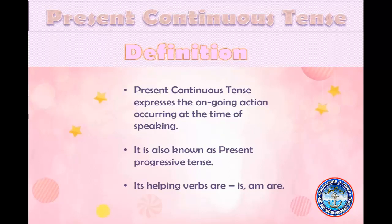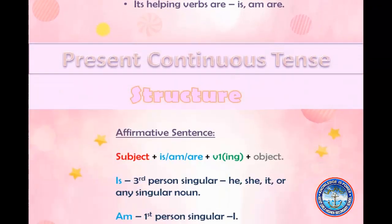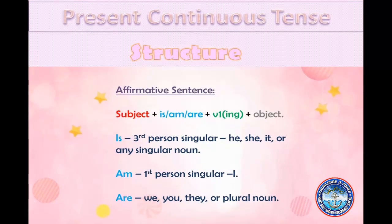Here is the structure of present continuous tense in an affirmative sentence. An affirmative sentence is also known as a positive sentence. The structure is: subject plus helping verb (is, am, or are) plus main verb. The main verb contains the verb's first form plus the -ing form, plus object.